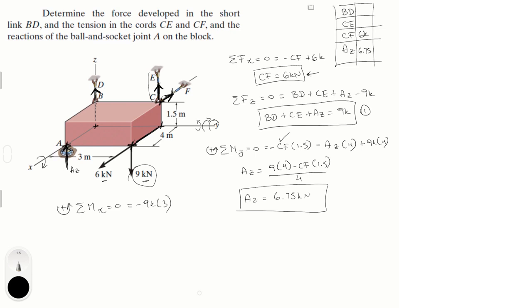Now we got CE times 3 because that's the distance between here and here where it is applied and this is positive because it's trying to turn it counterclockwise. So they both have a 3 so right away you can tell that CE is equal to 9 kN. CE is equal to 9 kN.